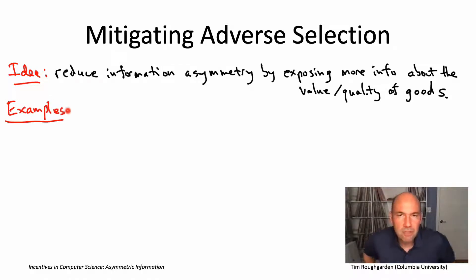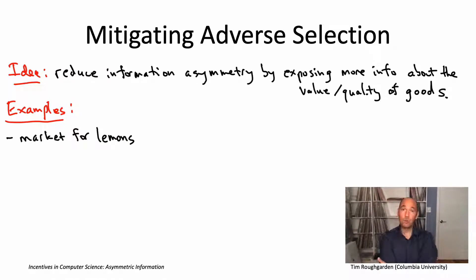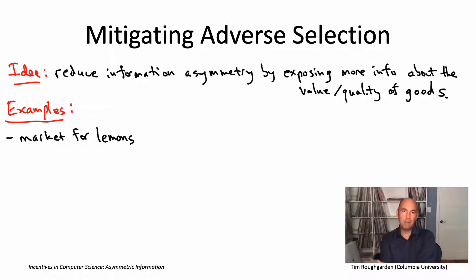For example, let's revisit the market for lemons. We have buyers and sellers. The sellers have good or bad cars, and the sellers know whether the car is good or bad — the buyers do not. So here, to reduce information asymmetry, we need to give the buyers more information about whether they're likely buying a good car or a bad car. Because then if a buyer knows or thinks they're likely to be getting a good car, they'll be willing to pay a high price for it. So how would you expose more information about car quality?